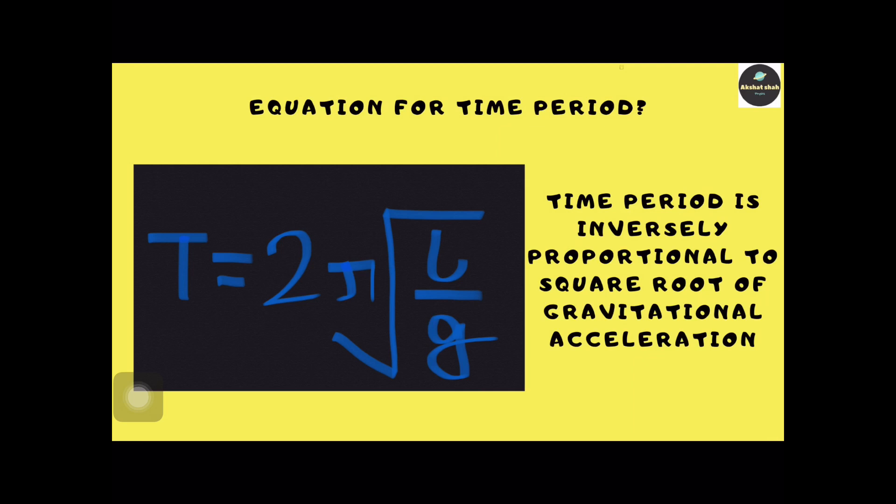The equation for the time period is given alongside, where time period equals 2π times the square root of L over g, where L stands for effective length while g stands for gravitational acceleration.